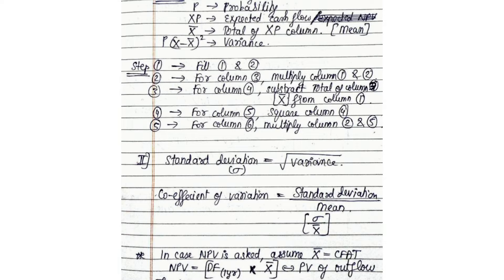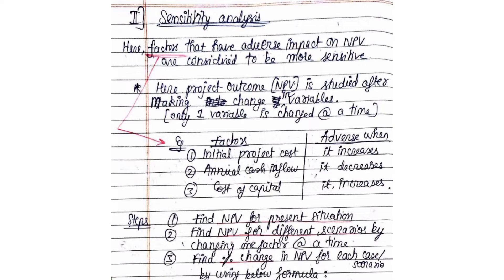On the second page I have shown how to do sensitivity analysis. In sensitivity analysis, there are a few factors which will affect the NPV — your project cost, your cash inflow, your cash outflow, and your cost of capital. What we do in this scenario is first find out the NPV for the ideal or normal case, which we call NPV in the present situation.